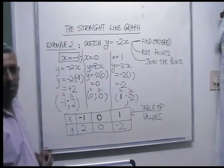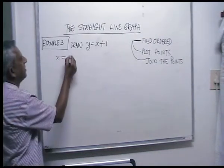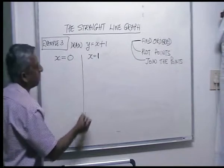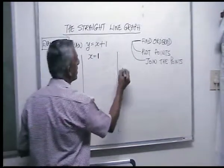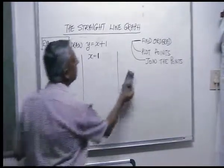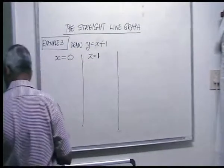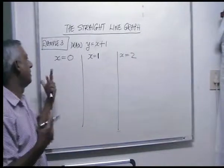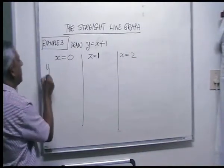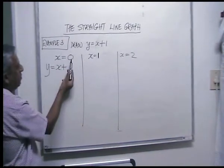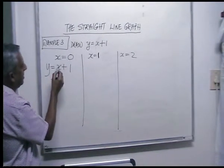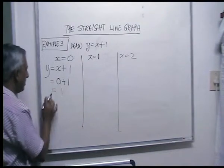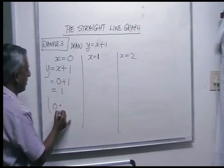Let's do another example. Suppose you said x is zero, x is one, and x is two. You substitute: y is equal to x plus one. Put the number where there is x, so it'll be zero plus one, and zero plus one gives you one. So your first ordered pair is zero, one.